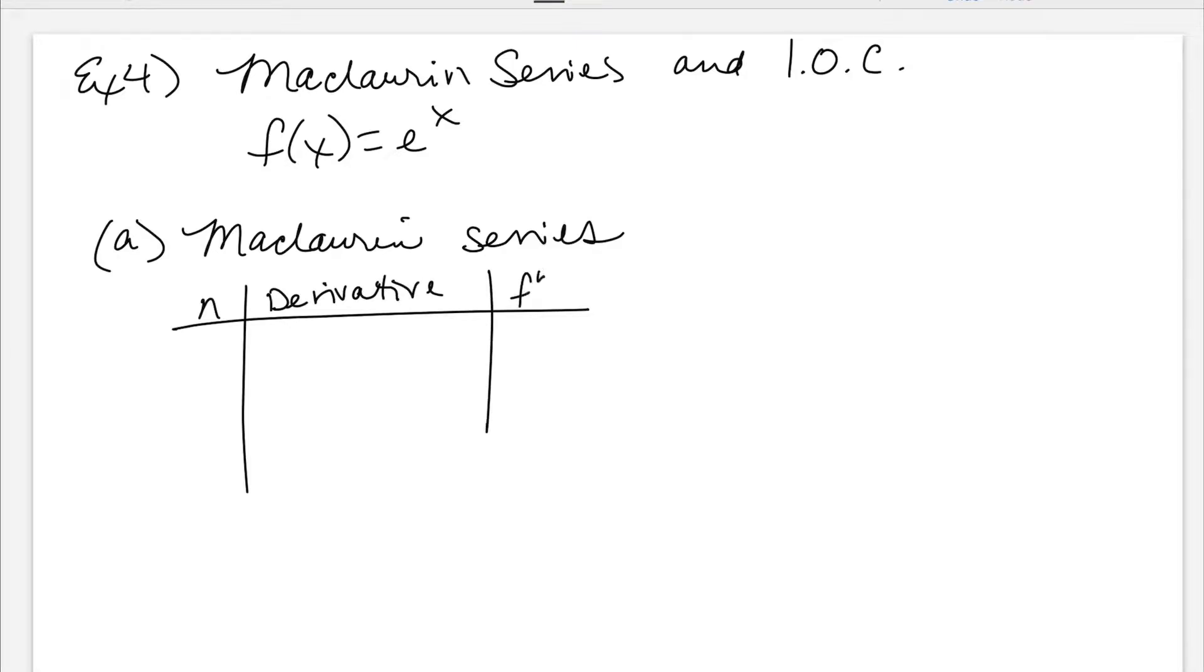We're taking the derivative. I know this is Maclaurin, so I'm centering around zero. I've got e to the x. My original function is e to the x. If I plug in zero, e to the zero is one. Now, what's the derivative of e to the x? E to the x. How awesome is this? So my derivative of e to the x is e to the x. Every single time I plug zero into my exponent, e to the zero is one. Every single time.